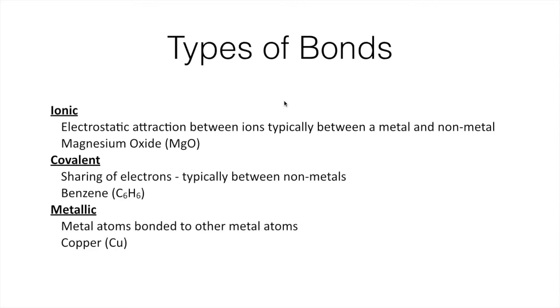We're going to look at some different types of chemical bonding today. There are three main types of bonds that we need to consider: those are ionic, covalent, and metallic bonds. Ionic bonds are electrostatic interactions between ions, typically metals and nonmetals. Covalent bonds are a sharing of electrons between two atoms, typically both nonmetals. And last but not least, we have metallic bonding, which is how metal atoms bond together in a solid metal.